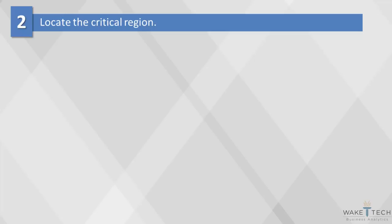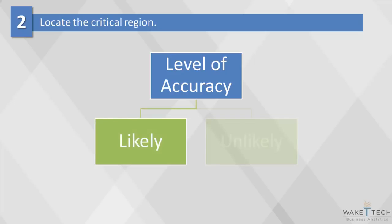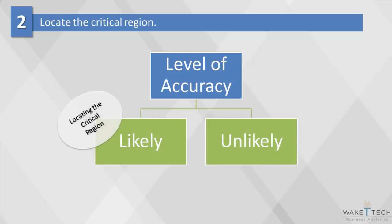In step two, we will locate the critical region. Once we've established the research question, we have to define the level of accuracy with which we want to measure our test statistic. Any estimate from a sample will not be exactly the same as the population parameter, so we have to decide what we think is likely versus unlikely. This is called locating the critical region. The critical region consists of outcomes that are very unlikely to occur if the null hypothesis is true — that is, sample means that are almost impossible to obtain.